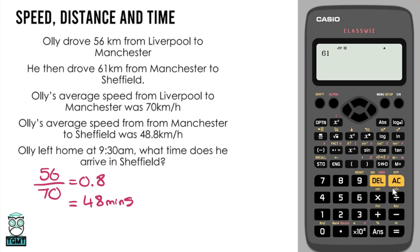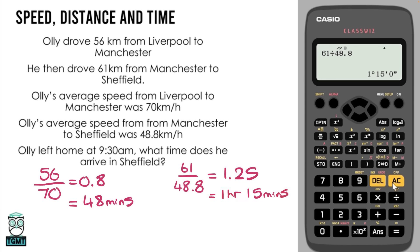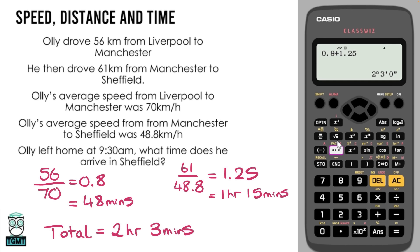For the second part: 61 kilometres divided by 48.8 gives 1.25. A common mistake would be to write 1 hour 25 minutes — it's absolutely not. Click the time button and it converts to 1 hour 15 minutes. Adding the two decimal hours, 0.8 + 1.25 = 2.05, click the time button: 2 hours and 3 minutes. If Ollie left at 9:30, two hours later is 11:30, plus 3 minutes is 11:33.